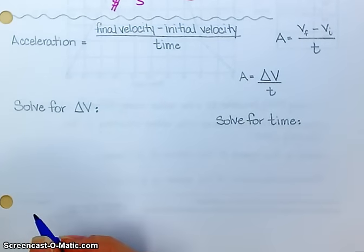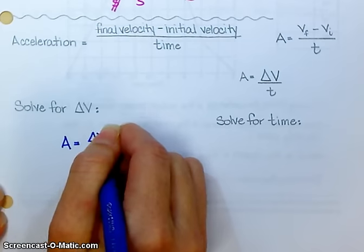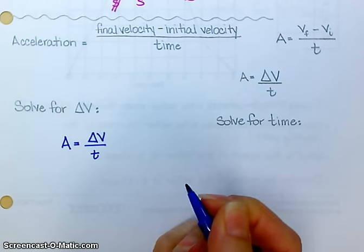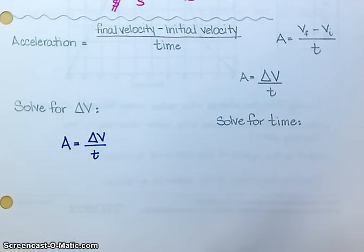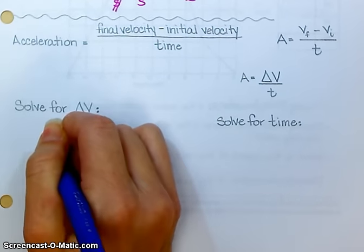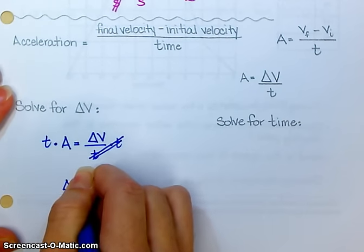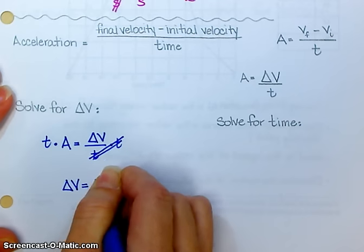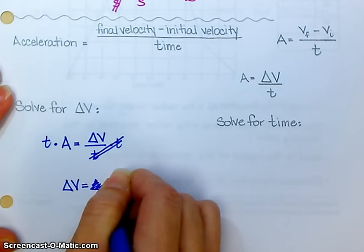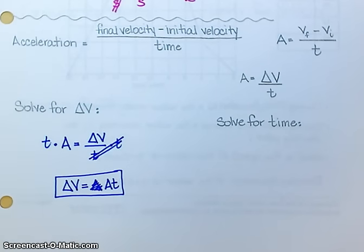If I want to solve for change in velocity, what am I going to do to get change in velocity all by itself? It's already divided by t, so what's the opposite? Multiply by t. Multiply both sides by time. It's not supposed to be a delta, it's supposed to be A. All right, so if I multiply both sides by t, I get change in velocity is acceleration times time.